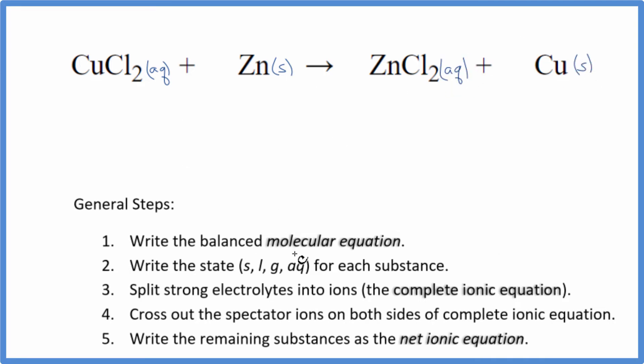So now that we have the states, we can split the strong electrolytes into their ions, and this is going to give us the complete ionic equation. So copper, we don't know its charge based on just looking at it. We have to look at what it's bonded to. Chlorine, that's going to have a one minus. We have two of them. This has to be two plus.